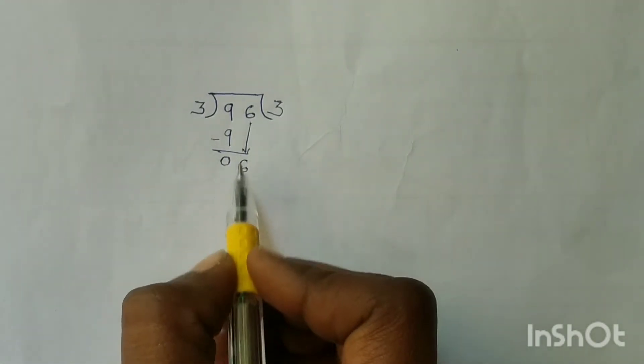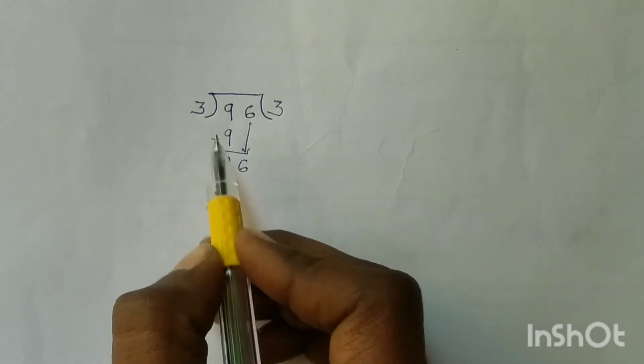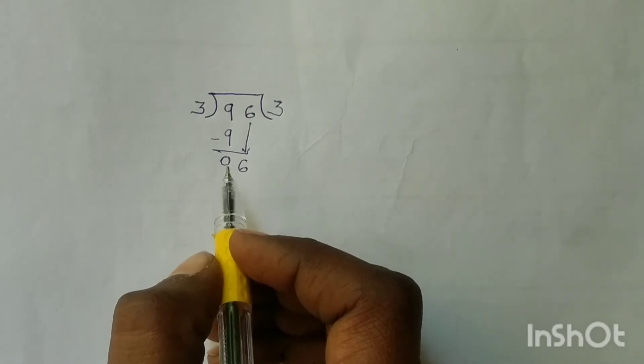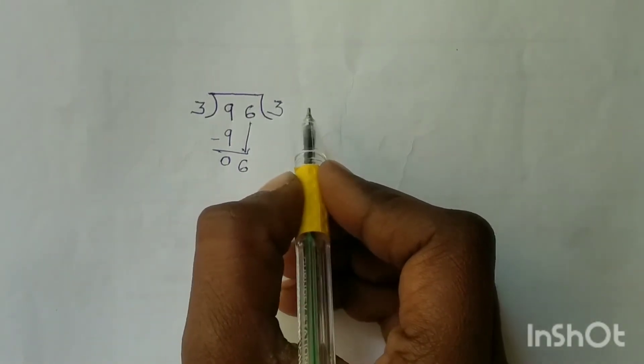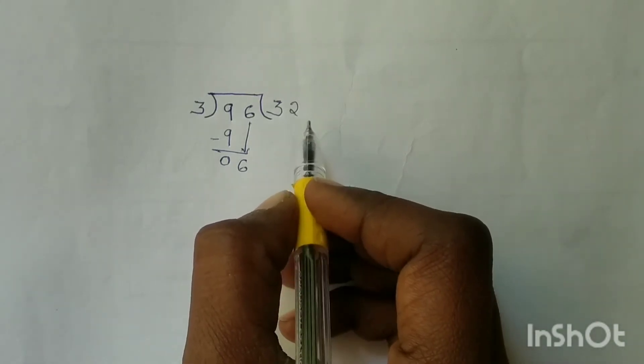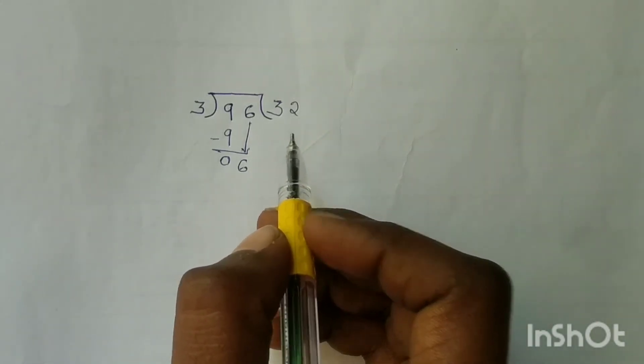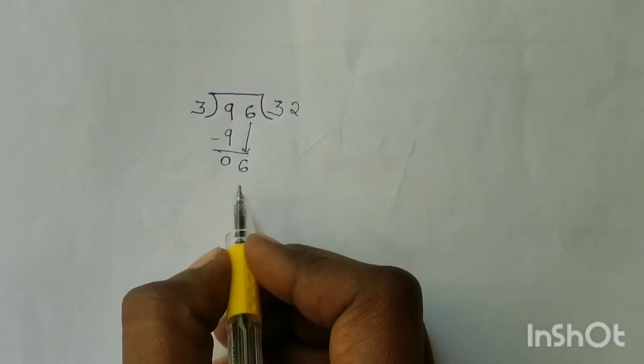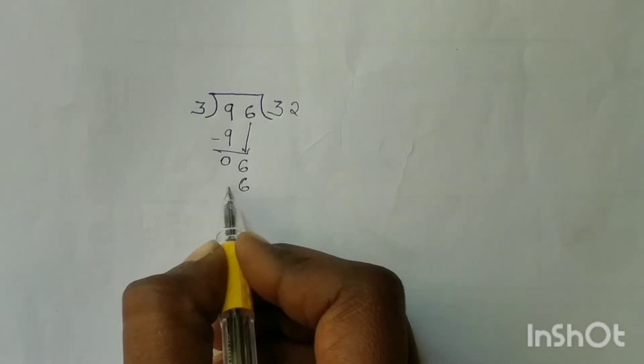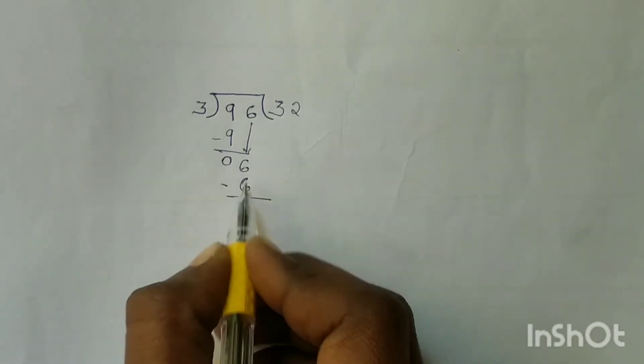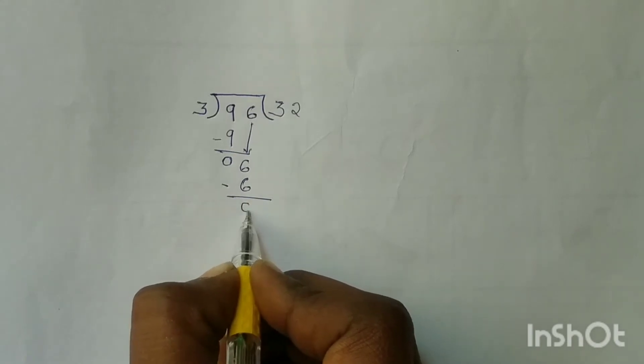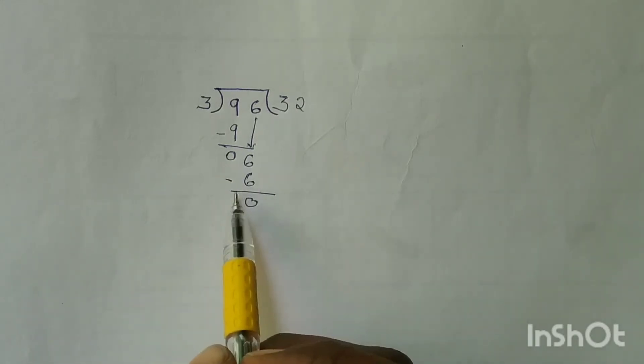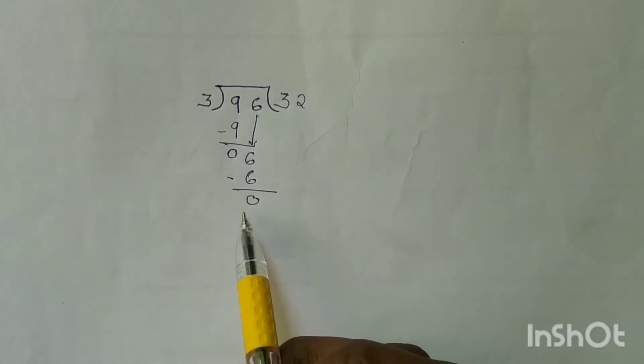And divide 6 by 3. Now we will divide 6 by 3. 3 times 1 is 3, 3 times 2 is 6. So write 2 in the quotient next to 3, and write 6 below the dividend in the ones place.